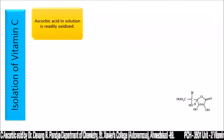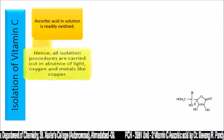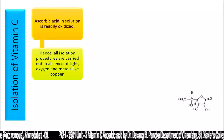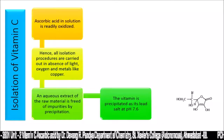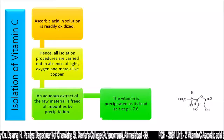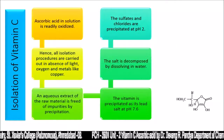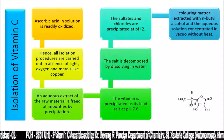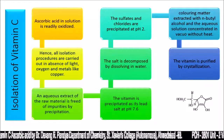Isolation of vitamin C: ascorbic acid in solution is readily oxidized. Hence, all isolation procedures are carried out in the absence of light, oxygen, and metals like copper. An aqueous extract of the raw material is freed of impurities by precipitation. The vitamin is precipitated as its lead salt at pH 7.6. The salt is decomposed by dissolving in water; sulfates and chlorides are precipitated at lower pH of 2. Coloring matter is extracted with N-butyl alcohol, and the aqueous solution is concentrated in vacuum without heat. The vitamin is purified by crystallization.